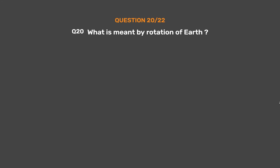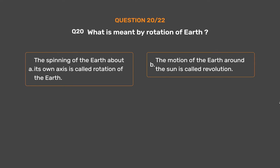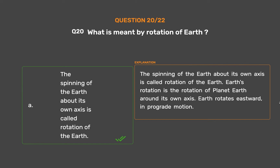Question number 20. What is meant by rotation of Earth? Option A: The spinning of the Earth about its own axis is called rotation of the Earth. Option B: The motion of the Earth around the sun is called revolution. Option C: Both A and B. Option D: None of these. The correct answer is Option A. The spinning of the Earth about its own axis is called rotation of the Earth. Earth's rotation is the rotation of planet Earth around its own axis. Earth rotates eastward, in prograde motion.